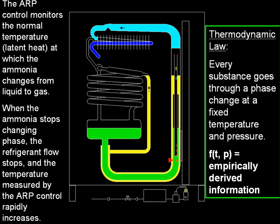The ARP control monitors the normal temperature — that is, the latent heat necessary to drive the cycle — at which the ammonia changes from liquid to gas. When the ammonia stops changing phase, the refrigerant flow stops and the temperature measured by the ARP control rapidly increases.